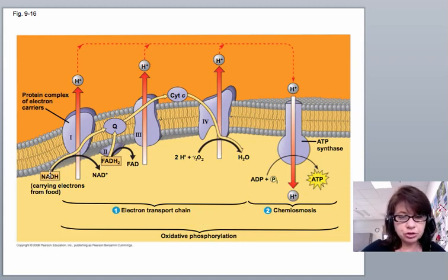NADH is an energy carrier. It's going to carry the electrons. Every time the NADH comes into the inner membrane or the cristae of the mitochondria, it drops off a little bit of energy and a hydrogen.